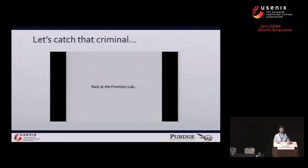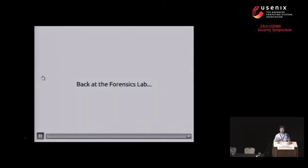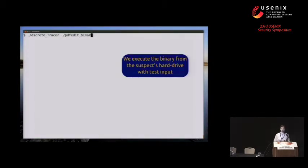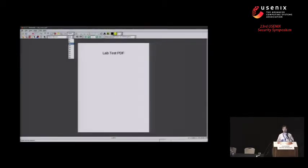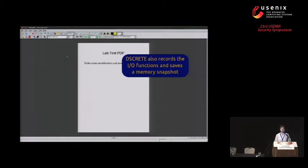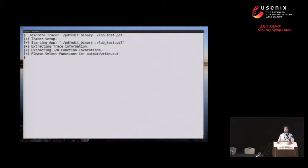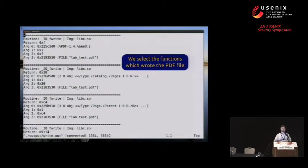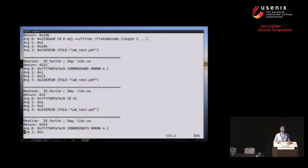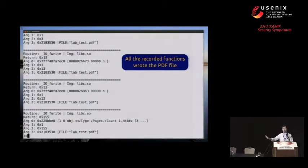So let's get back to that cyber crime story and see just how Discrete is going to help the investigators. Back at the forensics lab, the investigators are going to use Discrete to build a scanner plus renderer tool for that PDF editor application. They've already extracted the binary from the suspect's hard drive and they're going to execute this PDF editor with just a simple test PDF. They'll perform some simple modifications, and in the background Discrete is going to be tracing the execution and saving those periodic memory snapshots. Once they save the PDF and close the application, we review that log of output functions and mark the ones that saved the PDF file to disk.